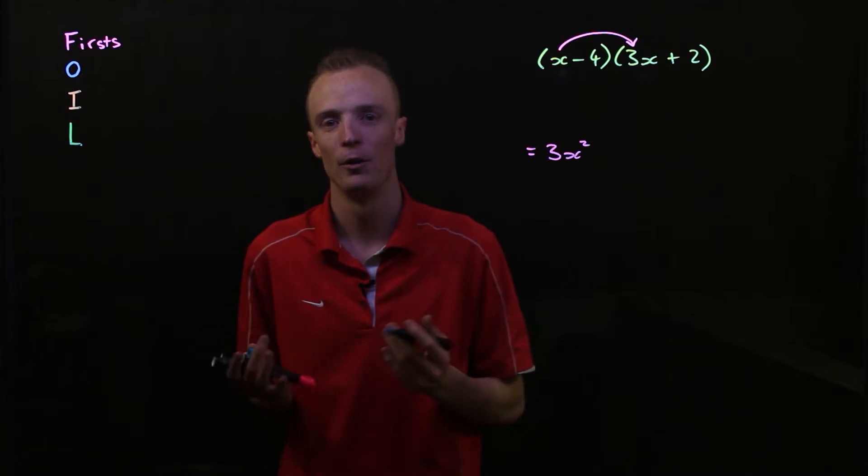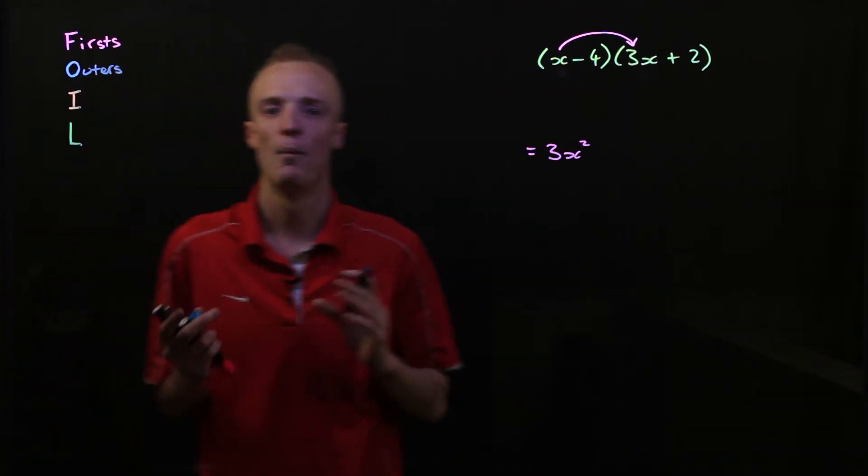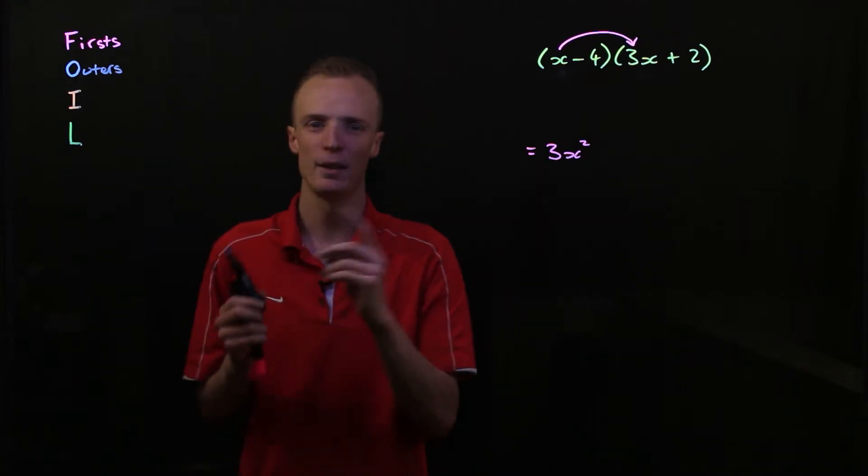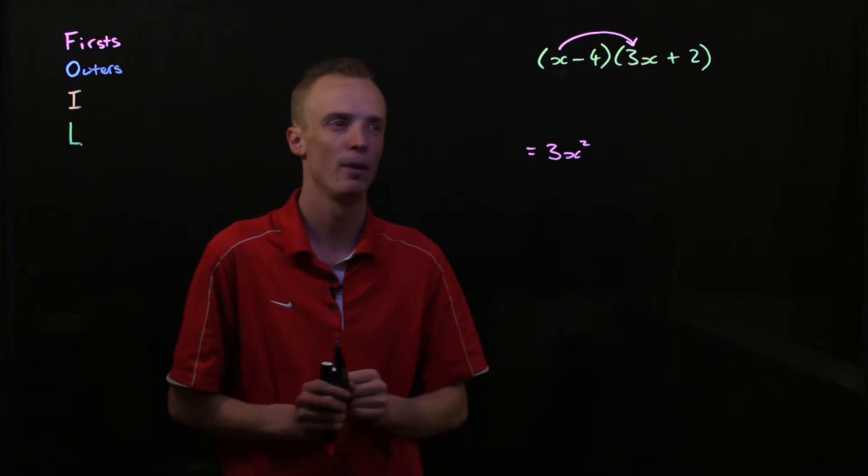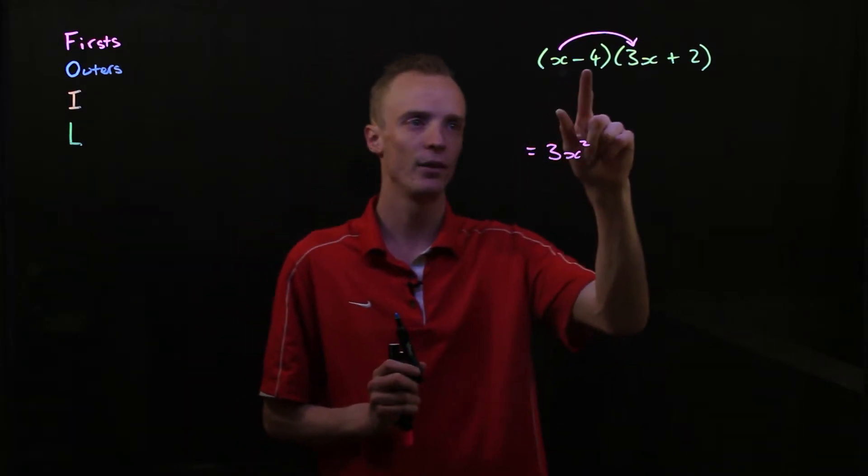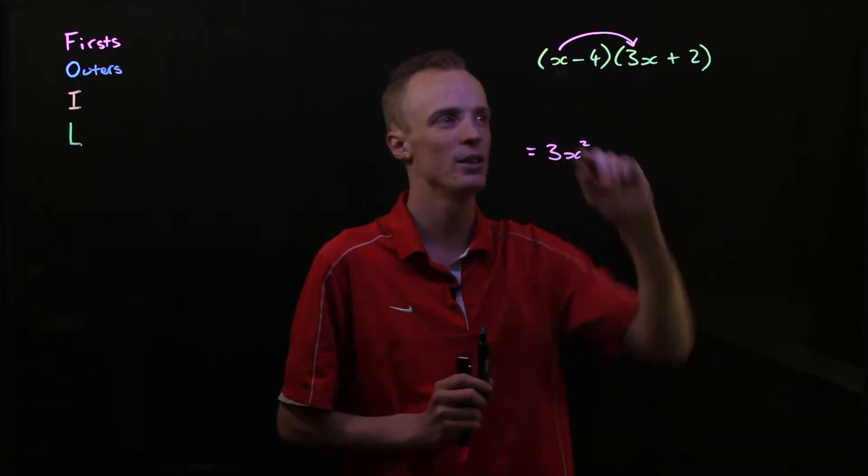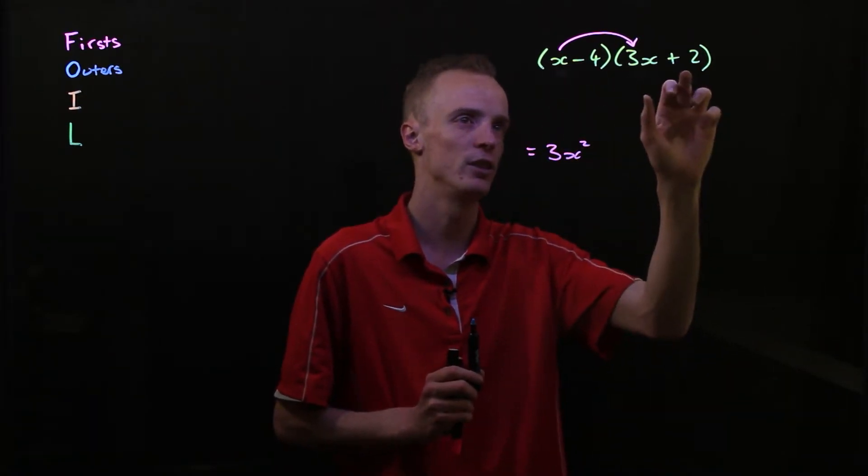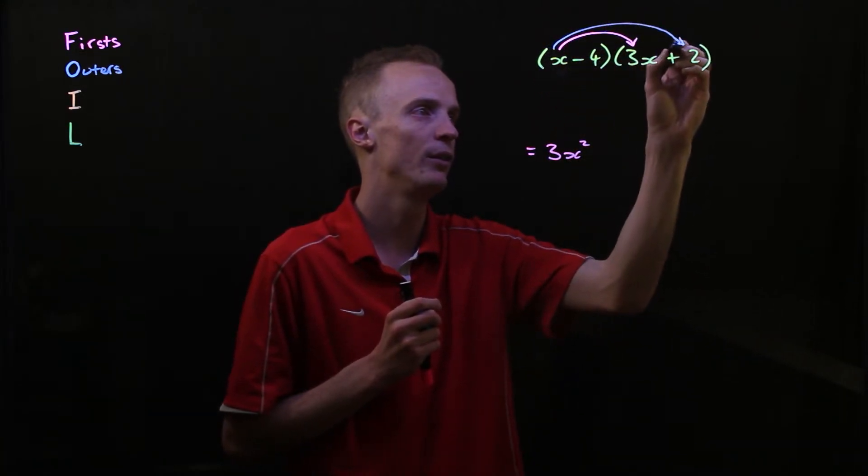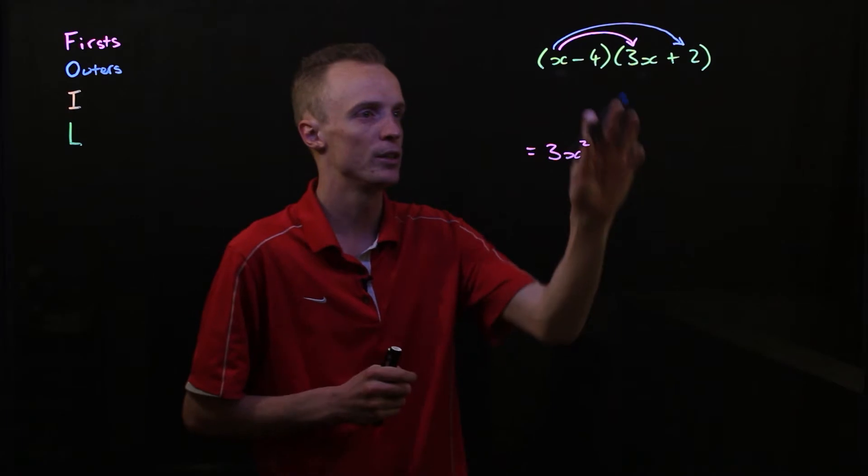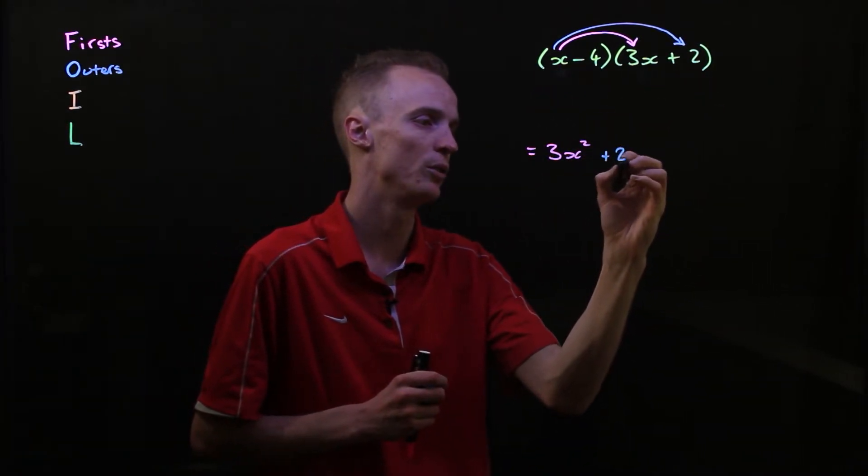So then we move to O, which stands for outers. And what that means is I'm going to take the most outside terms from each other and multiply them together. So the most outside term of this bracket is the x, and I multiply that with the most outside term of this bracket, which is this 2. So x multiplied by positive 2 will be plus 2x.